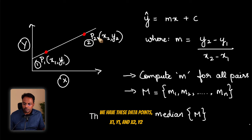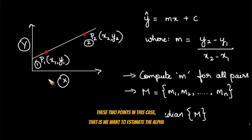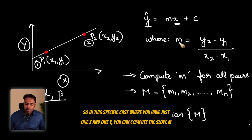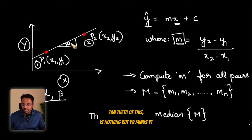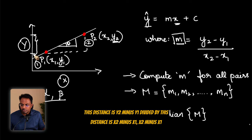Now what we are interested in is we are going to estimate the line of best fit or rather the straight line that connects these two points. That is we want to estimate the alpha and beta coefficients of this line of best fit that goes between p1 and p2. So in this specific case where you have just one x and one y, you can compute the slope m. And the slope m here, tan theta of this angle, is nothing but y2 minus y1, which is this distance, divided by x2 minus x1, which is this distance. So that will give you the value of slope variable.